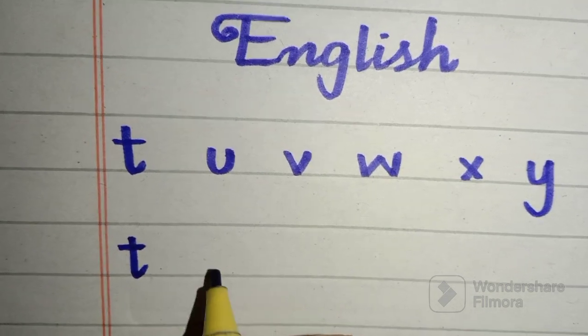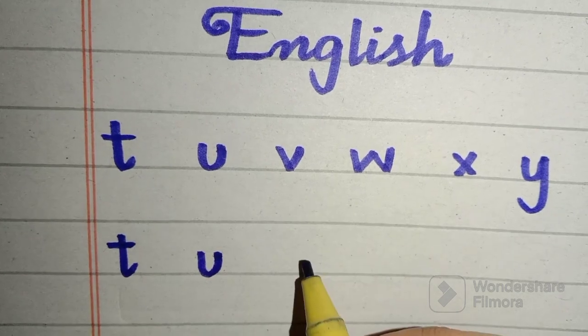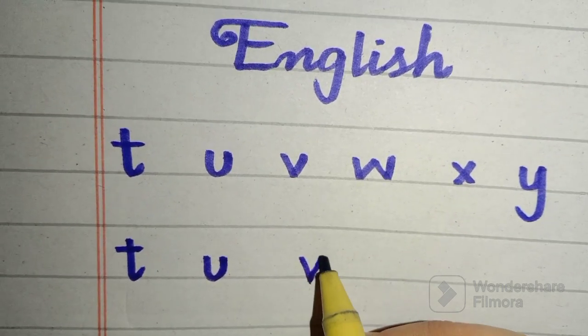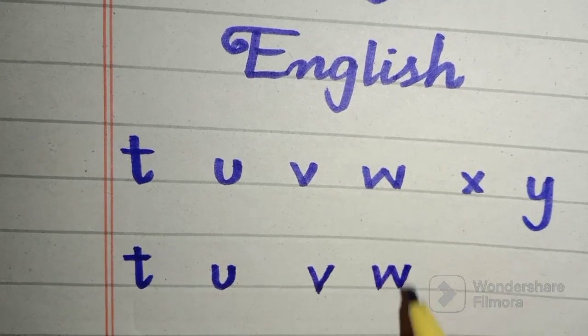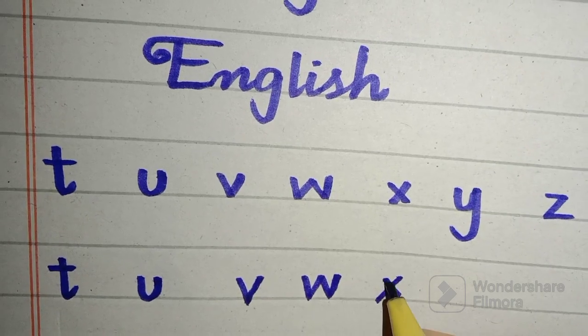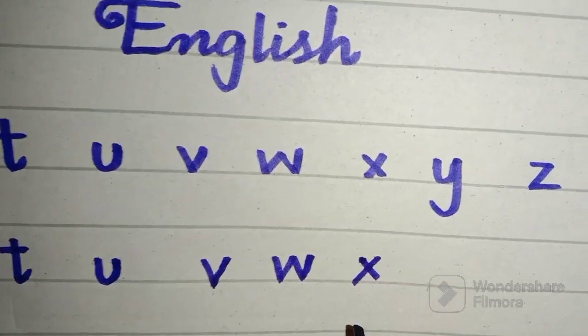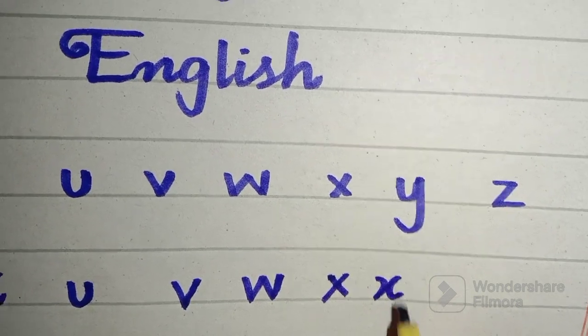Small 'x' is on the middle two lines. X can be written with another pattern. You can write X like this or this. Now I'm going to write letter Y. You will write small 'u' and then downward.